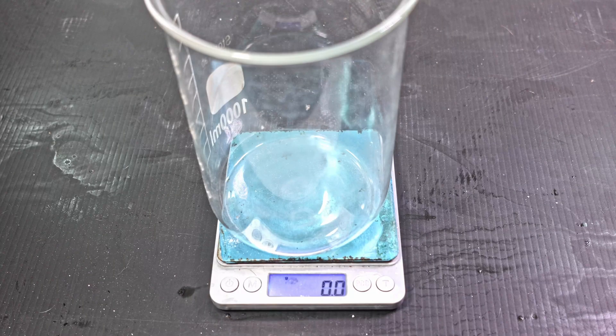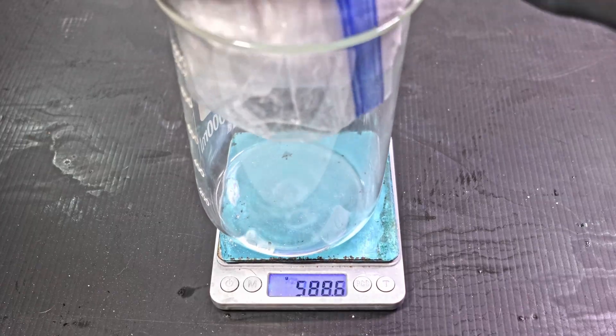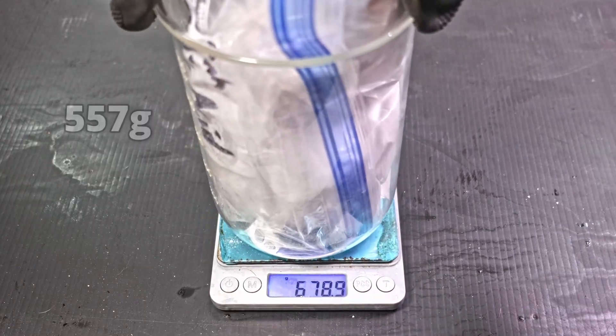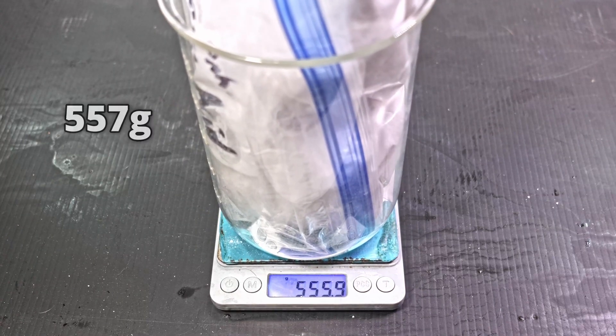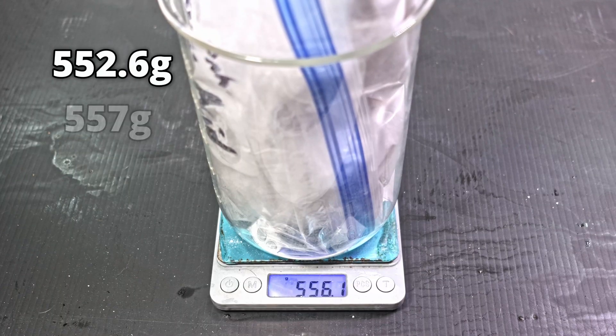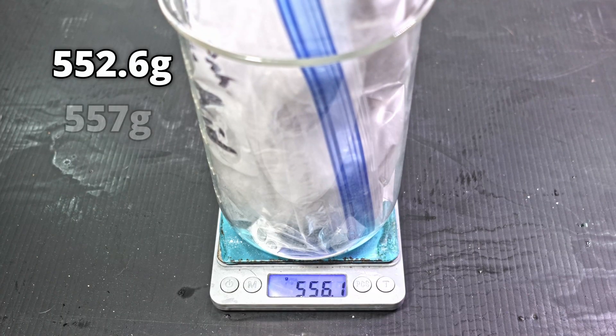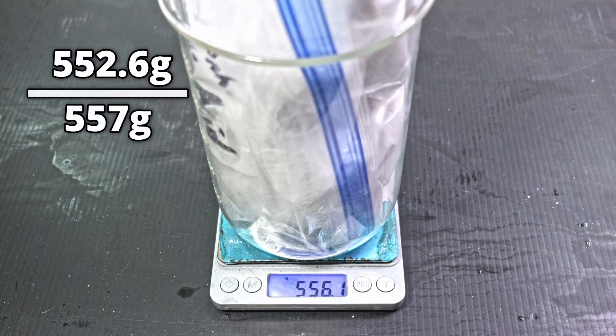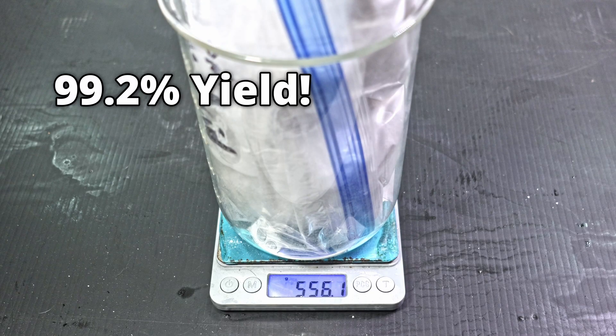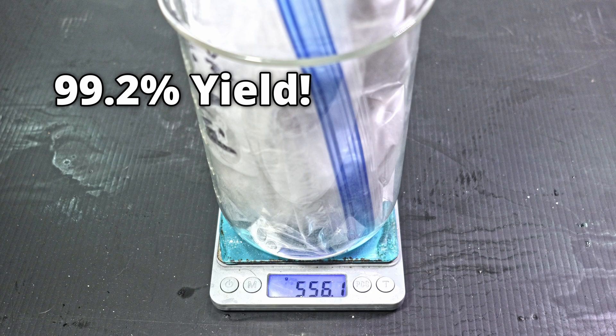Once I finish dehydrating all three of my 260 gram portions, I weigh it. The ideal weight is 557 grams. Minus the bag, I have around 552.6 grams of anhydrous oxalic acid. That is approximately a 99.2% yield. This is the method used in organic synthesis, and there is no doubt it is the best.